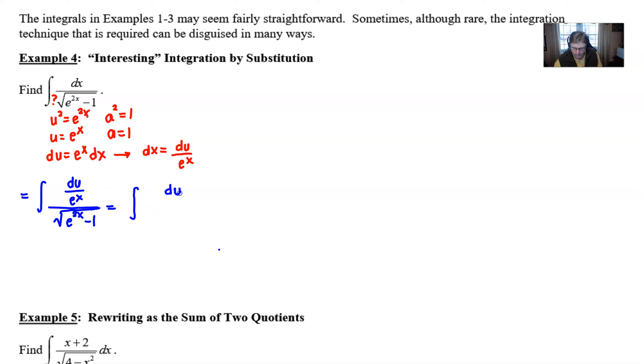What we essentially have is du on top and an e to the x times the square root of e to the 2x minus 1 on bottom. Now what does that mean? Well technically this e to the x is my u.